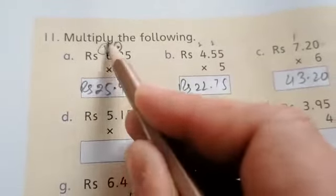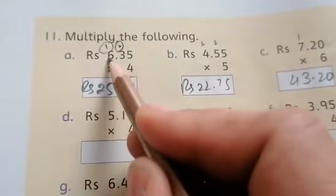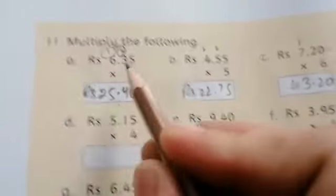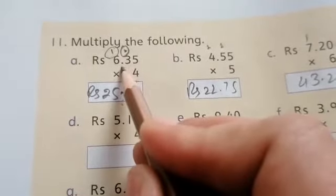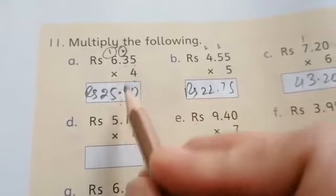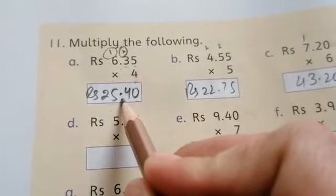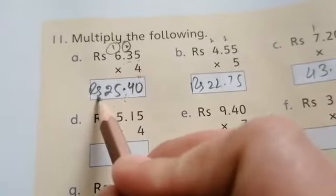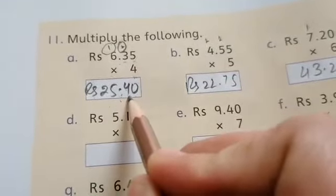6 times 4 or 4 times 6 is 24. Plus 1 is 25. The point is before 2 values. So we will write the point before 2 values. Rupees 25.40.